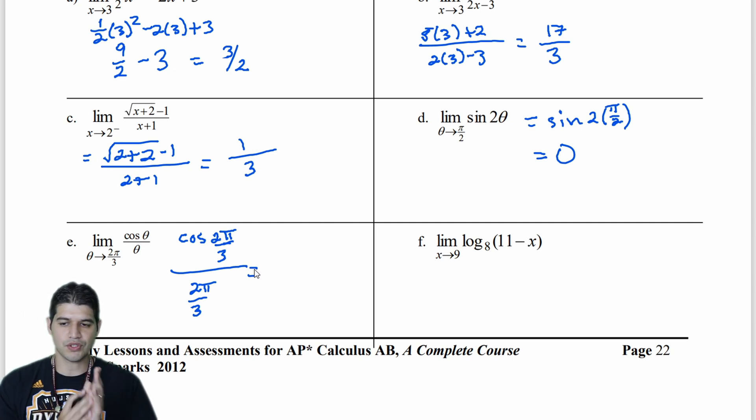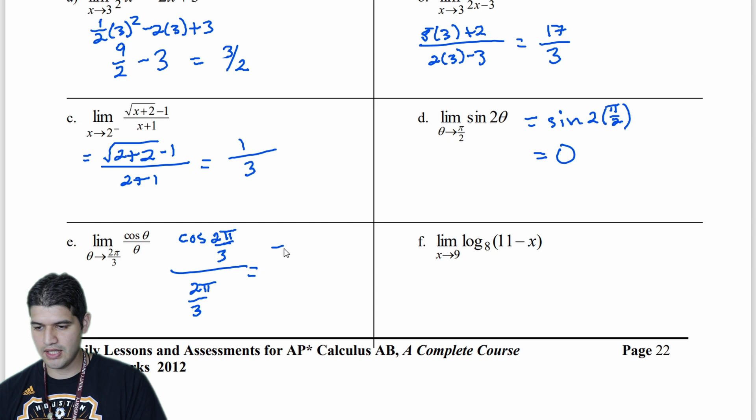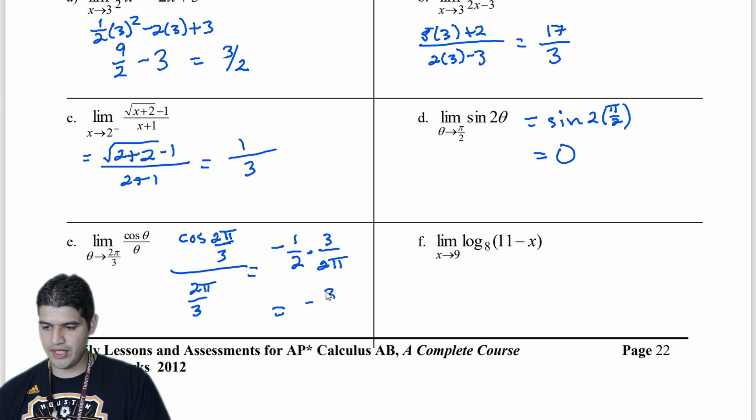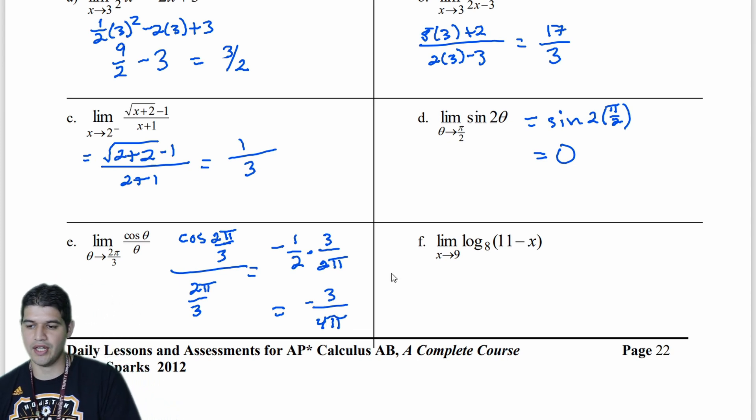And then cosine, that's going to be 1 half. So I have 1 half. Now it's going to be divided by 2 pi over 3, but I'm just going to multiply by the reciprocal. So times 3 over 2 pi. And let's see what I get here. So negative 3. So negative 3 over 4 pi. And that's going to be our answer there.